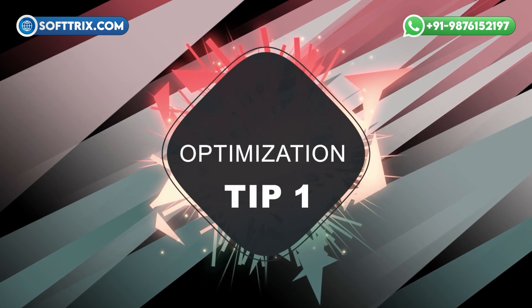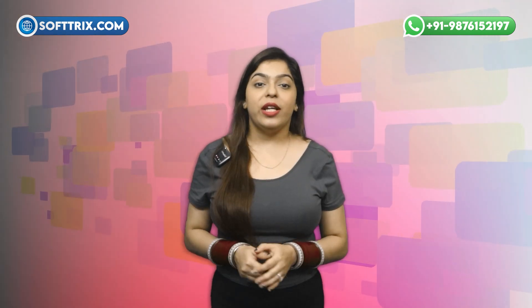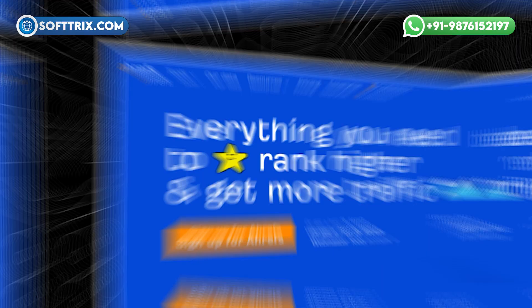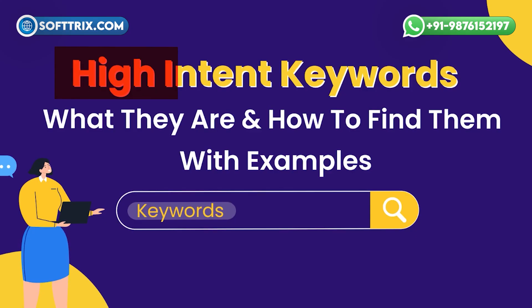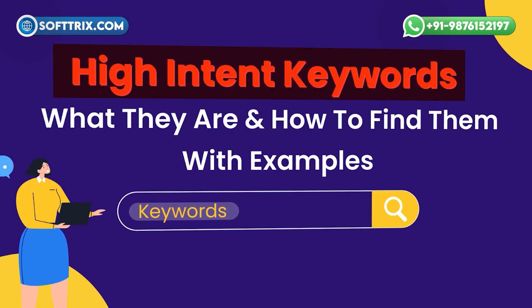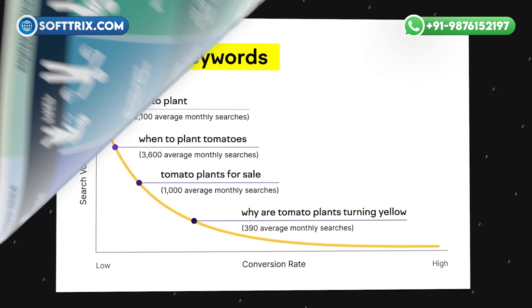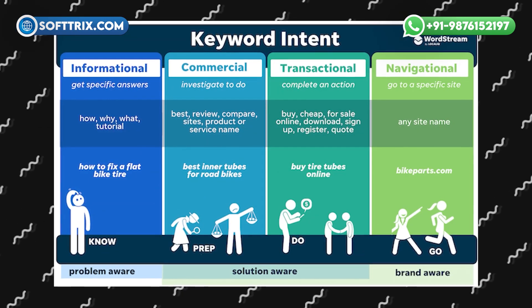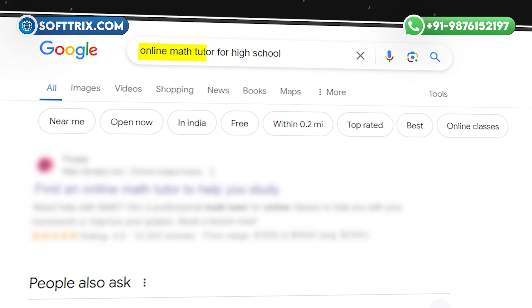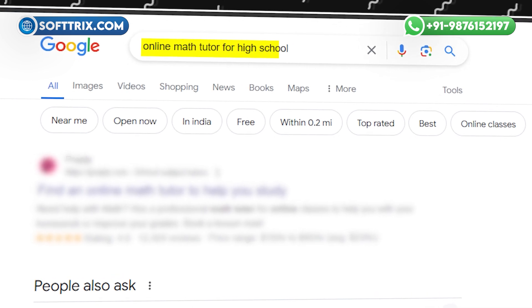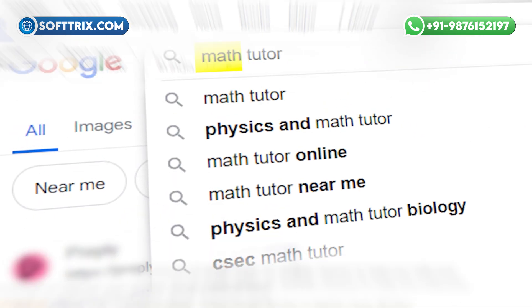Optimization Tip No. 1: Use keyword research tools like Google Keyword Planner, SEMrush, or Ahrefs to identify high-intent keywords. Focus on long-tail keywords that indicate strong purchase intent. For instance, a tutor might use 'online math tutor for high school' instead of just 'math tutor'.